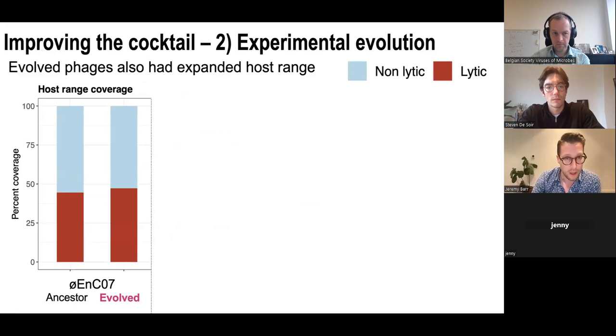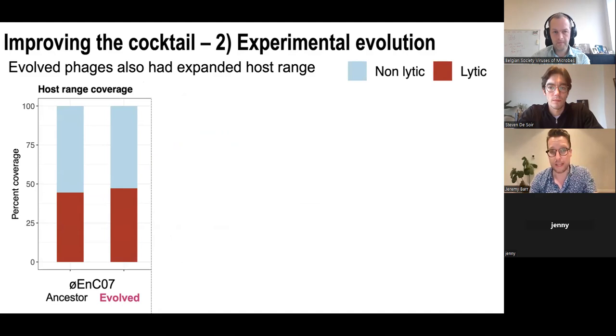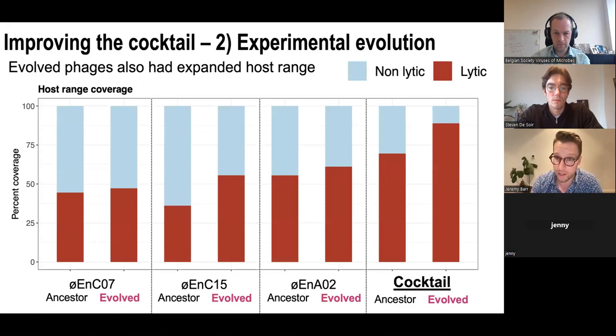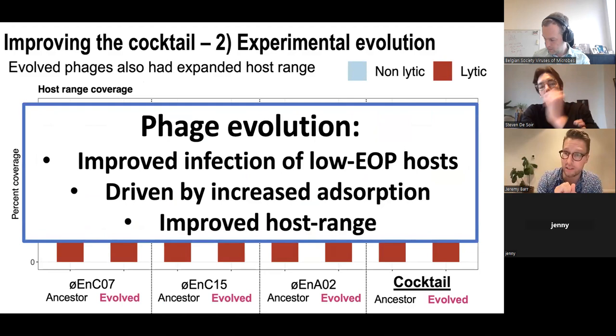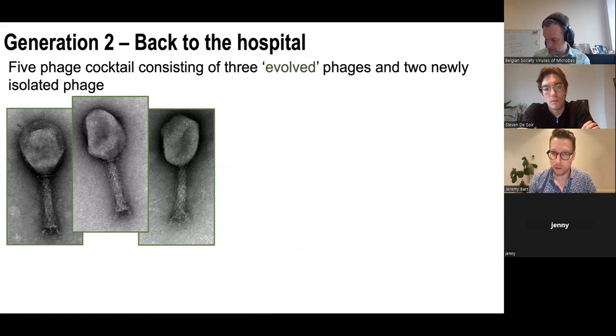As a side effect, these evolved phages also had an expanded host range — we didn't train for this, but for two of our three evolved phages we saw a slight increase in host range, giving about an extra 10% host coverage in the cocktail. To summarize: we saw increased infectivity for low EOP hosts driven by increased adsorption, and an unexpected increase in phage host range as well.